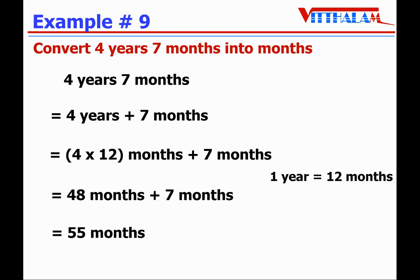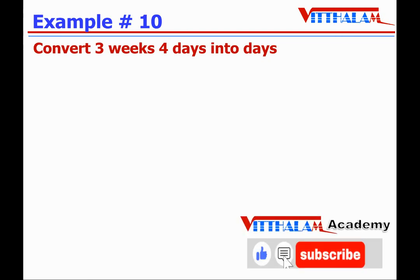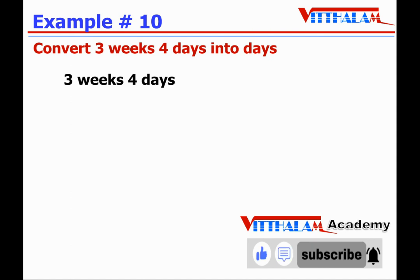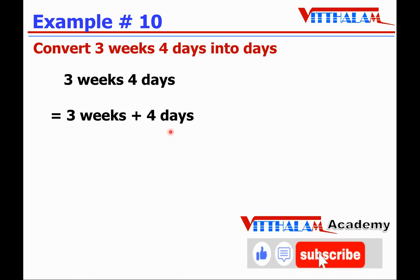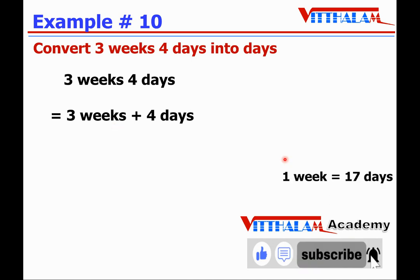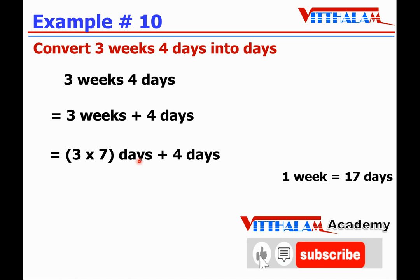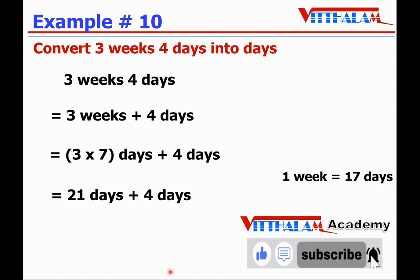Let's understand one more: convert 3 weeks 4 days into days. 3 weeks 4 days is 3 weeks plus 4 days. We cannot add directly because the units are different, so we must first convert to the same unit. 1 week equals 7 days, so 3 multiplied by 7 equals 21 days, plus 4 days equals 25 days.